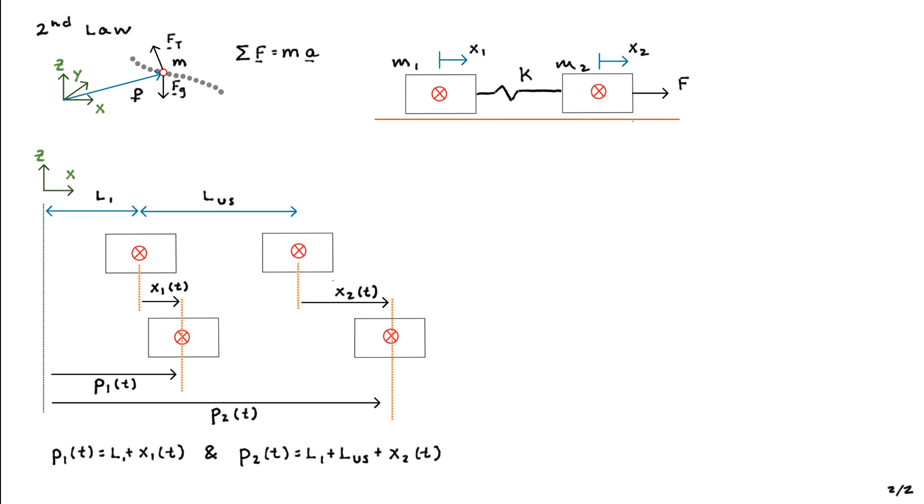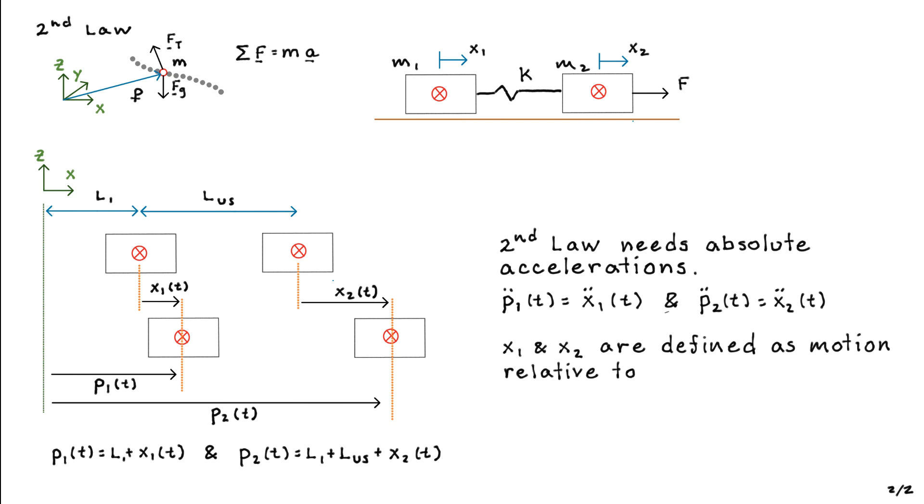And notice that I've been very specific about showing what things are functions of time and which things are not. And that's important because what we need for Newton's second law is absolute accelerations. So I need to take two derivatives of those puppies, and when I do that, all the constant quantities, the L1 and the LUS, go bye-bye. And so I just have P1 double dot is equal to x1 double dot, and P2 double dot is equal to x2 double dot. So I really don't need to use P1 and P2, or I can just think of it as the same thing as x1 and x2 from an acceleration standpoint.